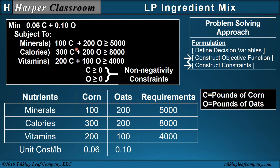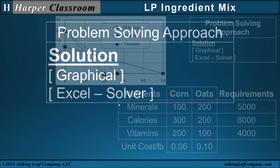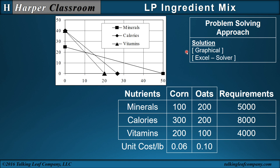Subject to my constraints. The left-hand side of the constraints is how many nutrients are provided into the feed — I take my standards, multiply them times the pounds of corn and oats, and the left-hand side is how much nutrients I'm feeding them. That has to be at least as much as the minimum daily requirements. I add the non-negativity constraints on the decision variables. The solution uses Excel with a Solver add-in. I could also solve this graphically by graphing the constraints and identifying the extreme points, but in this video we will use Excel with a Solver add-in.